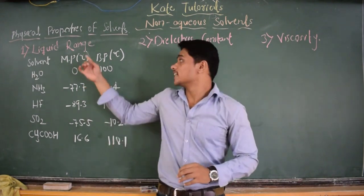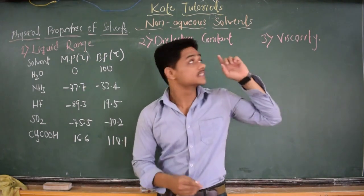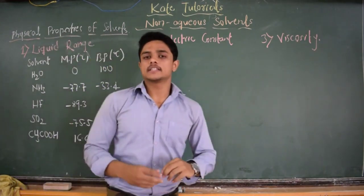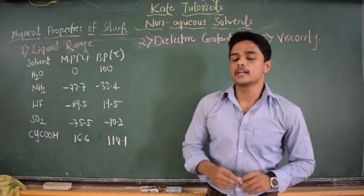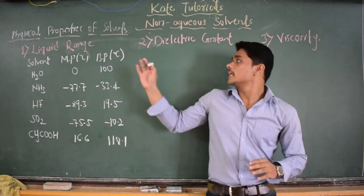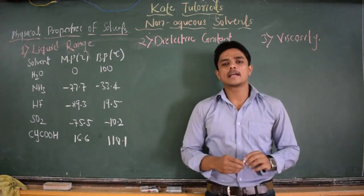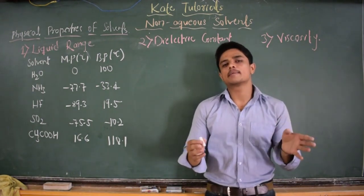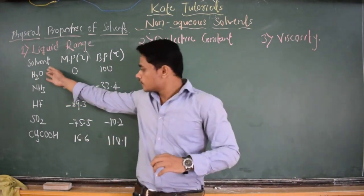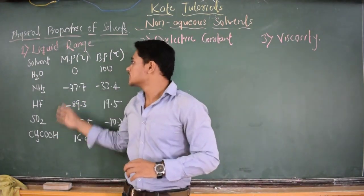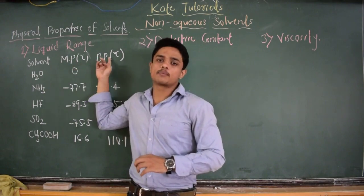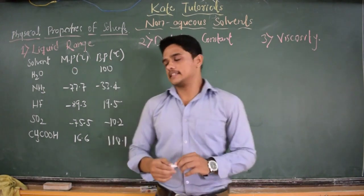One is liquid range, the second one is dielectric constant, and the third one is viscosity, which you have learnt in all your general classes. The liquid range is nothing but the range between melting point and boiling point. Here, I have written a few solvents, their melting point in degree Celsius and their boiling point in degree Celsius.